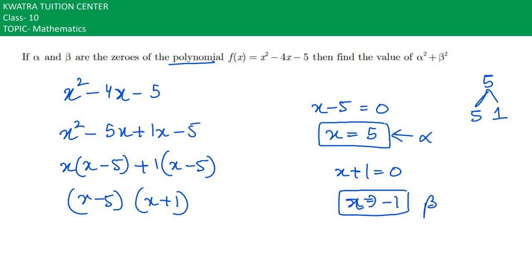Now we can find out alpha squared plus beta squared. We can easily find this out. Alpha here is 5, so 5 squared. Beta here is -1, so -1 squared.